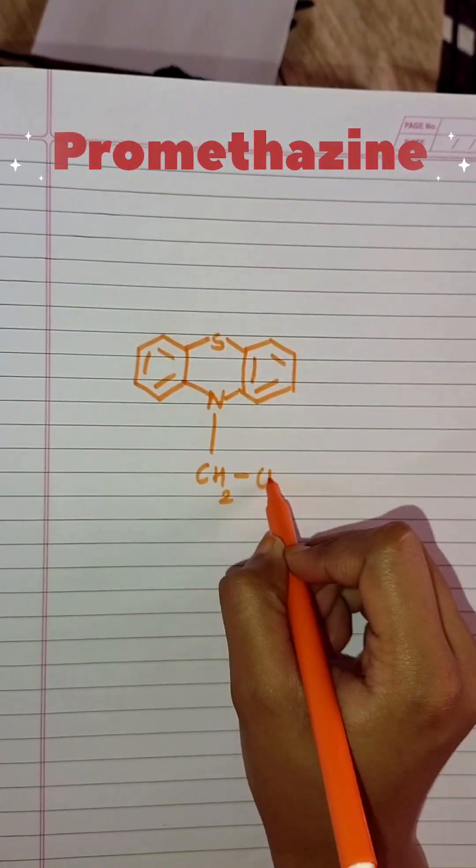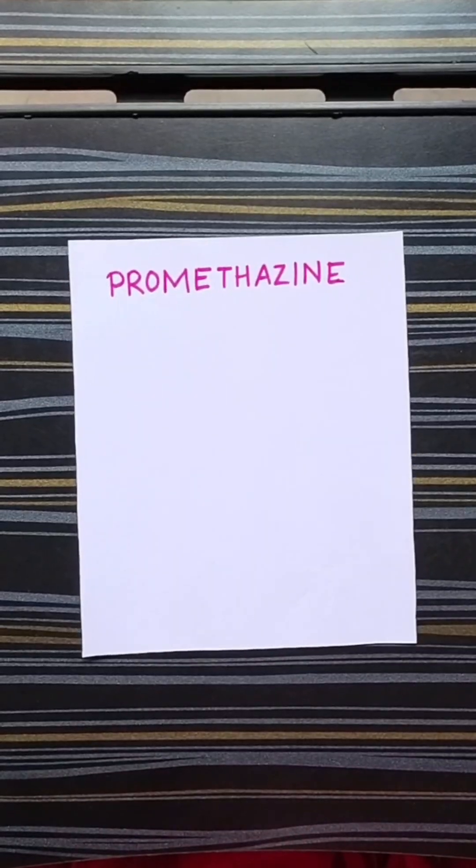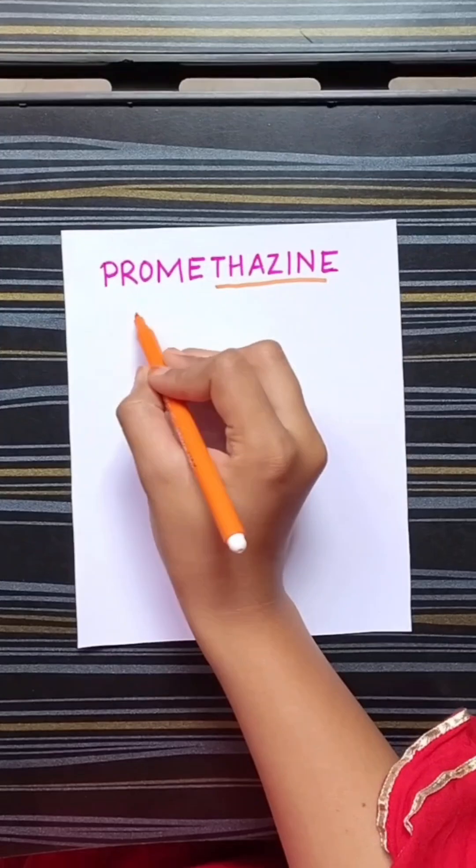Here's the trick to remember the structure of antihistamine promethazine. First, the main ring part, thiazine.